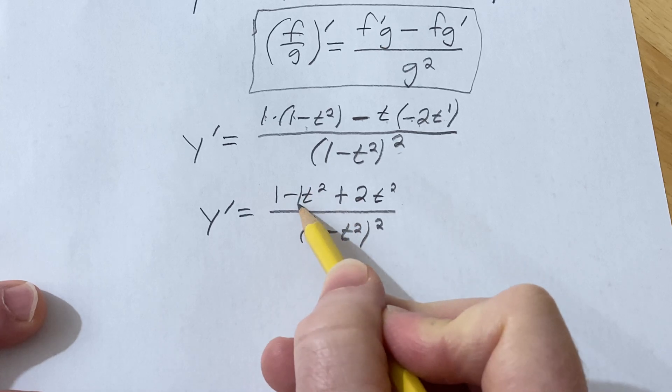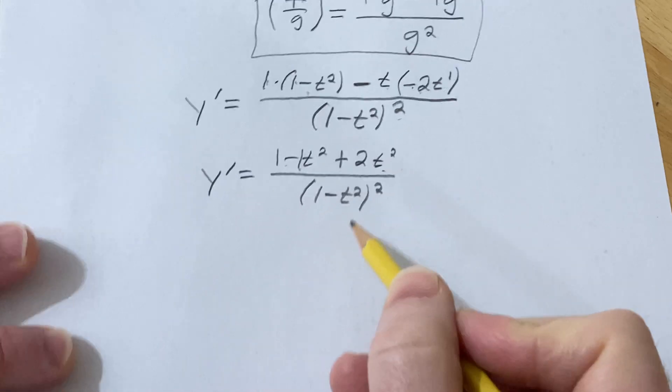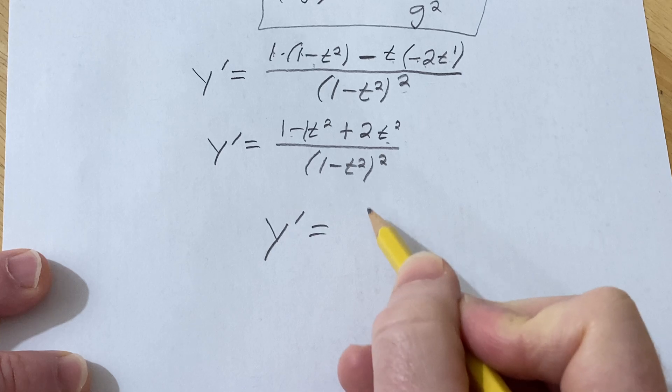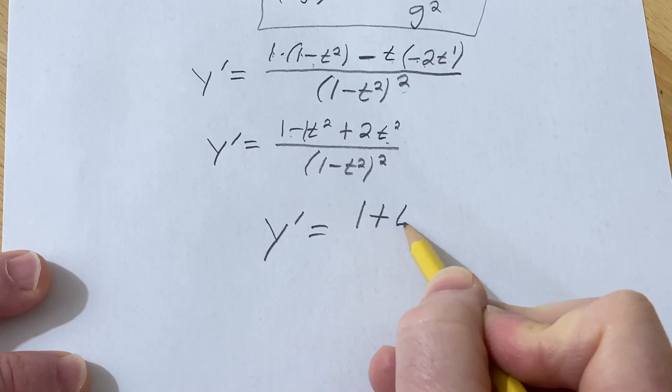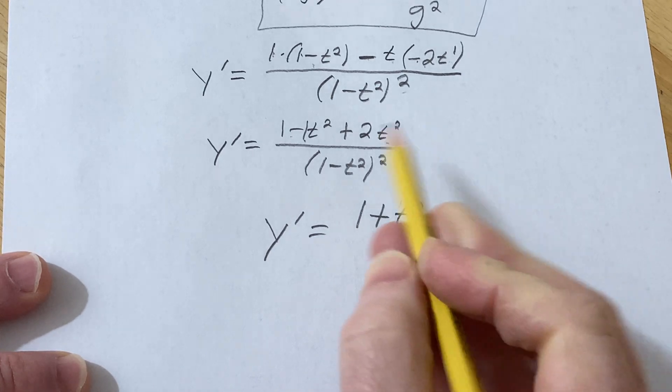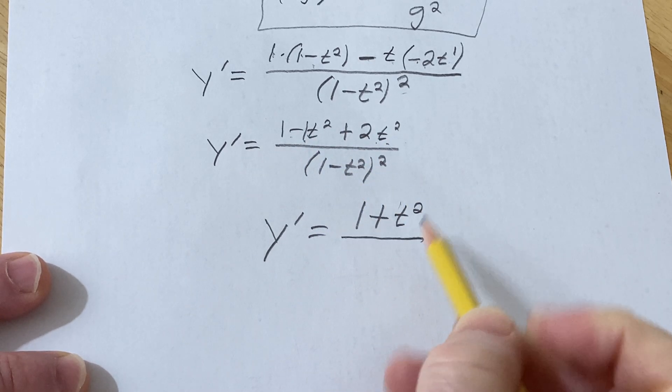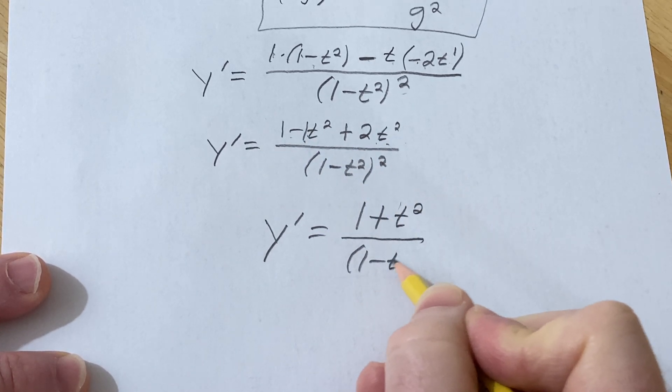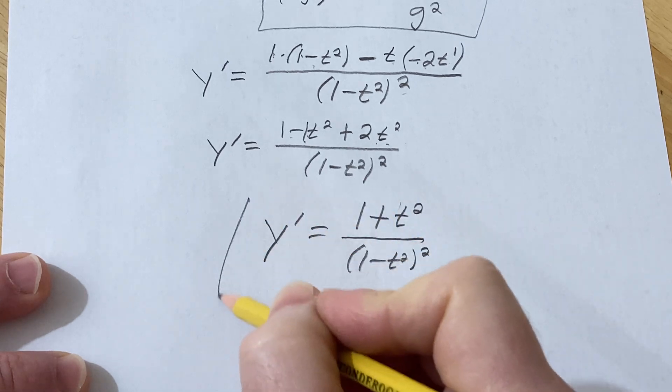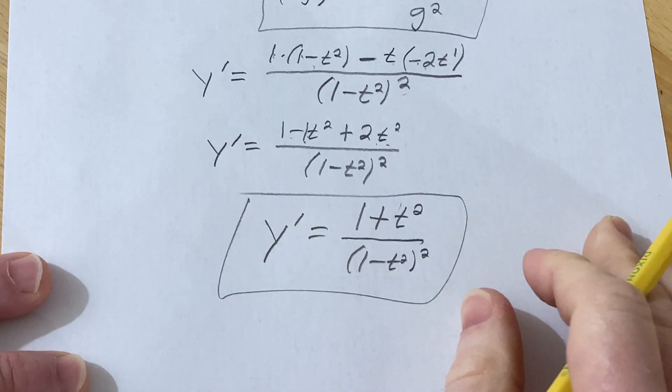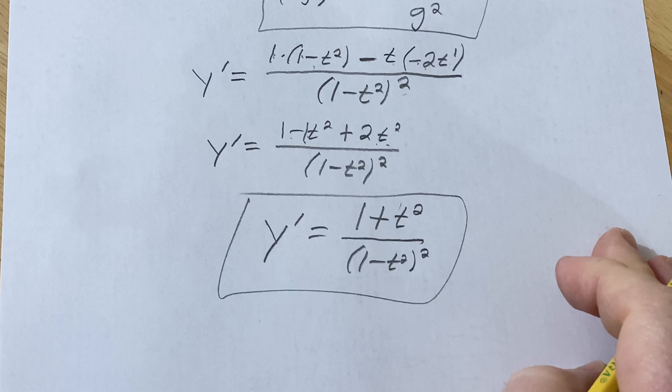There's really a negative 1 here, and so when you add these, you're just going to get 1. So y prime is equal to 1 plus t squared, right? Because it's 1t squared. Negative 1 plus 2 is 1. Over, parentheses, 1 minus t squared squared. And that's going to be the derivative of our function. I hope this video has been helpful. Good luck.